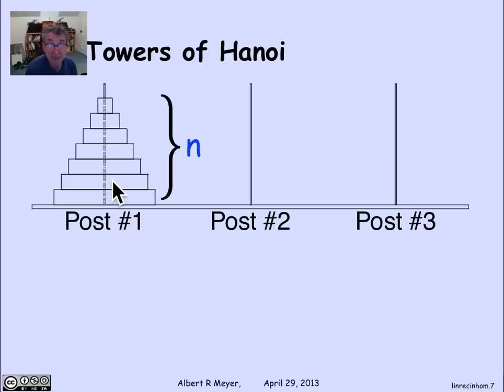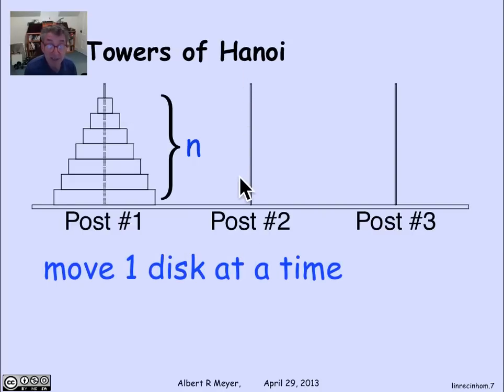We can suppose there are n of these disks in the general case, going from bigger on the bottom to smallest on the top, and they sit on that pole. And the Tower of Hanoi is a puzzle that says we want to get this entire stack of n disks moved onto the second post, subject to some constraints. First of all, we can only move one disk at a time.